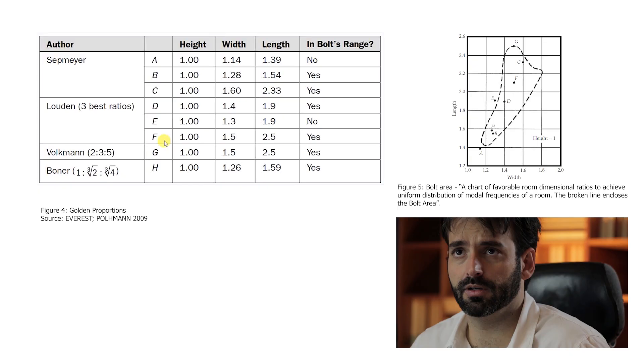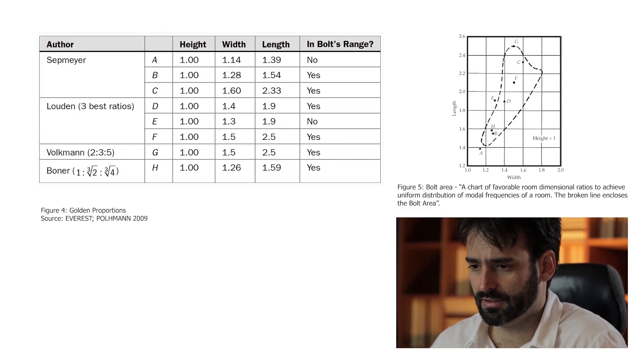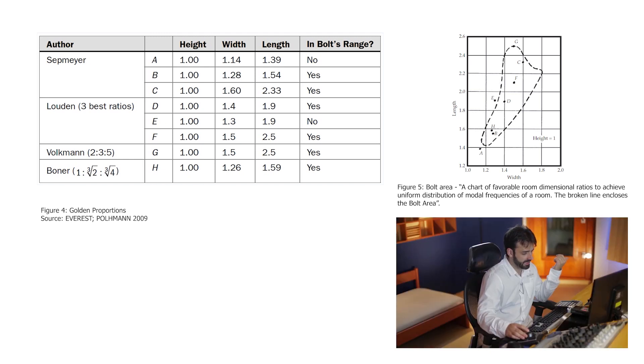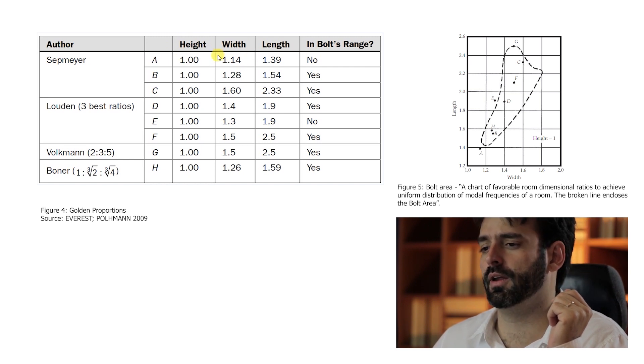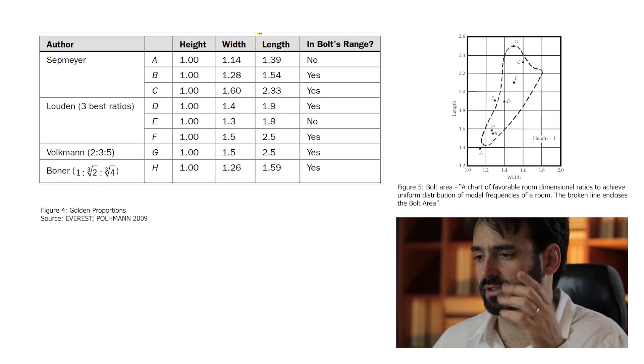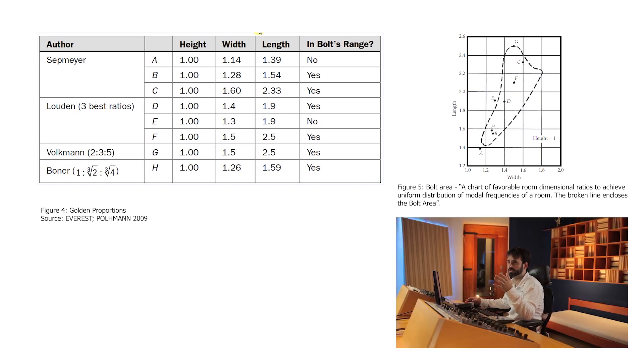Some researchers have proposed dimensions called golden proportions for rooms that have the ideal spacing between axial modes — which are the most relevant — resulting in a room where the stationary waves are evenly distributed. Rectangular rooms with these proportions can be seen in the next picture, sourced from Everest and Pullman. We can see different researchers' proportions here — for example 1 : 1.14 : 1.39 — different proportions that can give good results for the modes in the room.